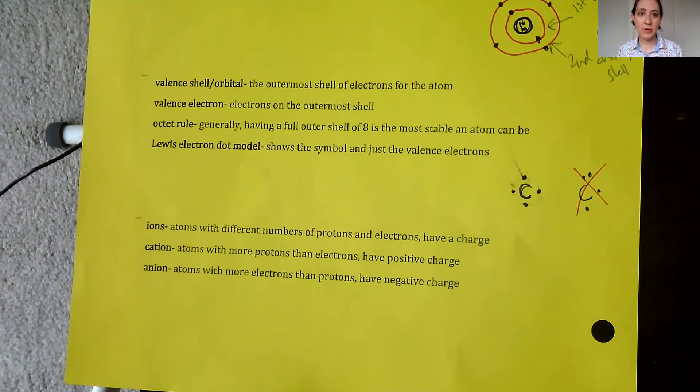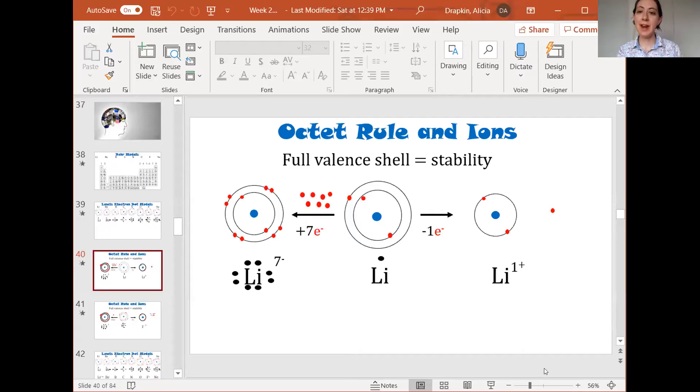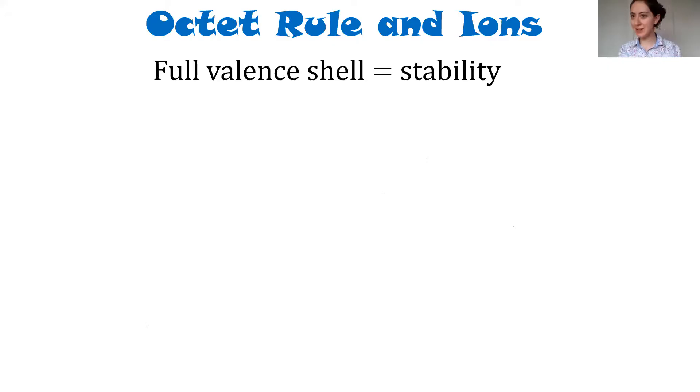Now with this PowerPoint, you're going to notice that some of the slides have a white background. If it has a white background, you don't need to write it down. If it has a yellow background, you do need to write it down. So I want to explain what's going on with all this. The general rule here is the octet rule. It means that atoms really like to have a full valence shell, which is the eight. Let's take a look at lithium here.